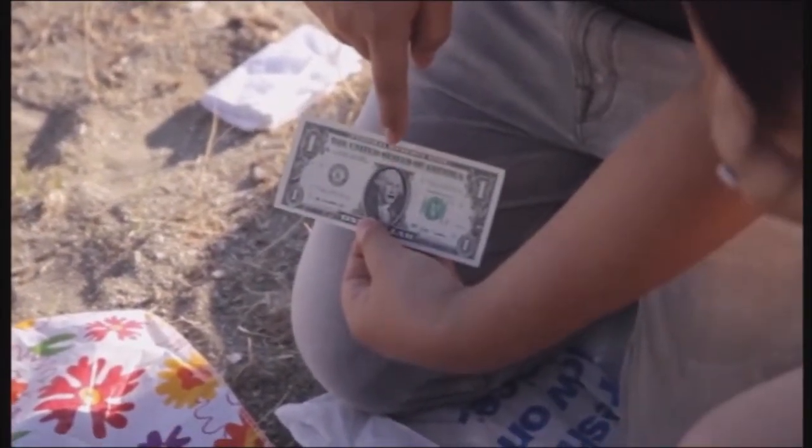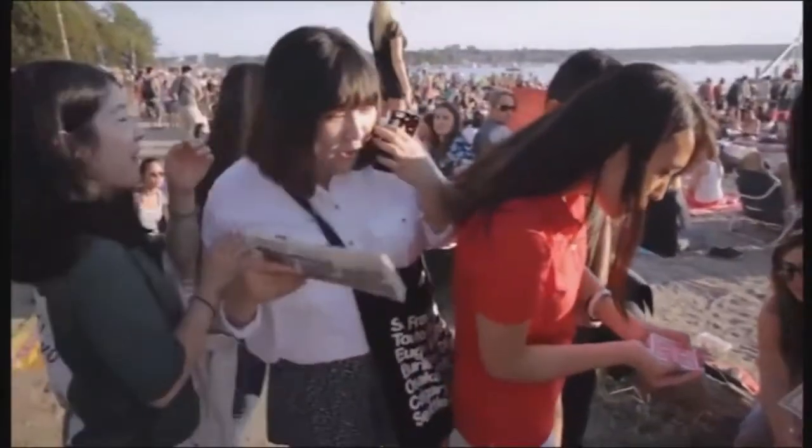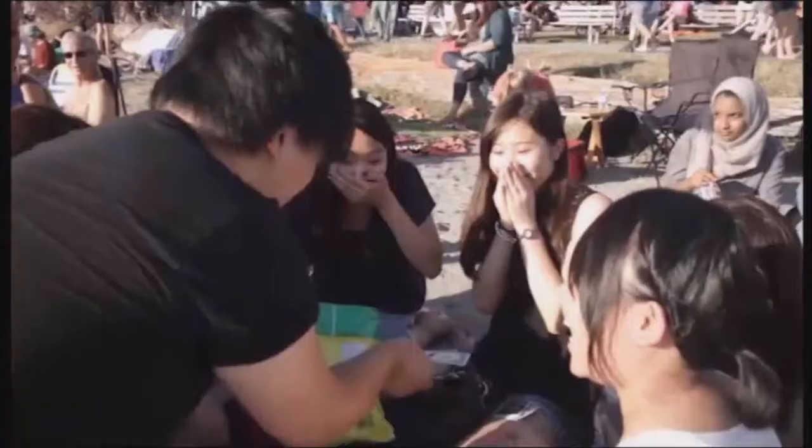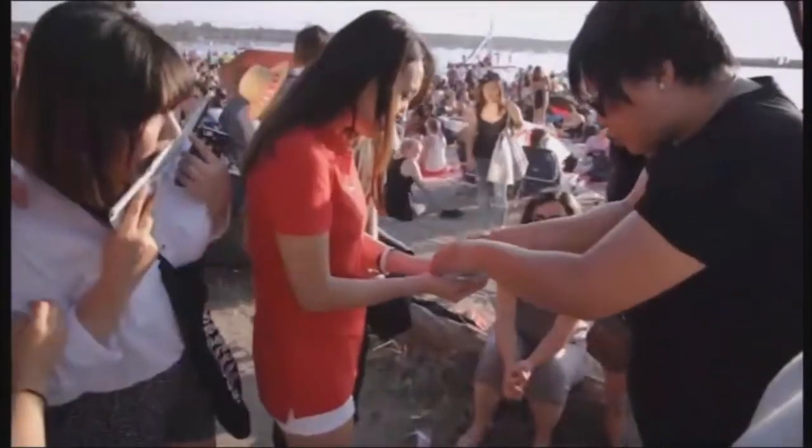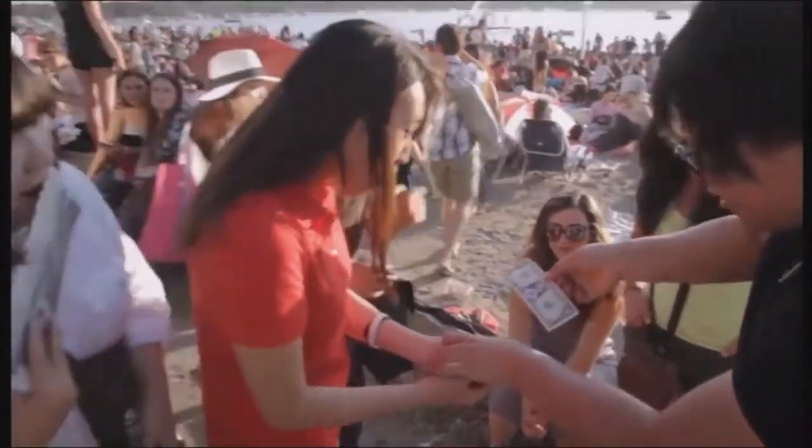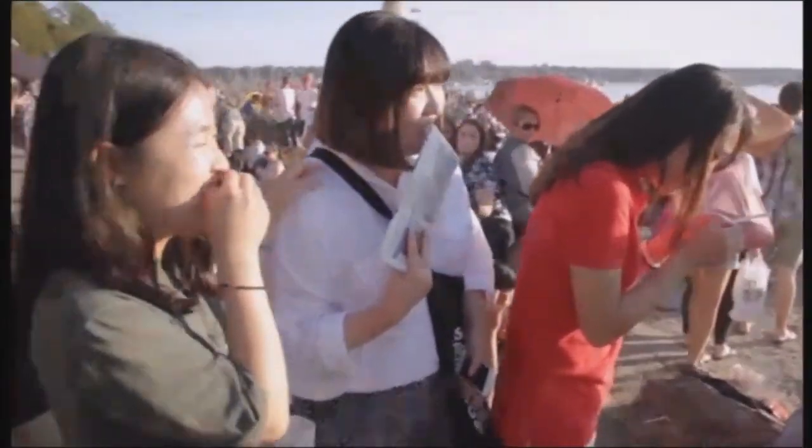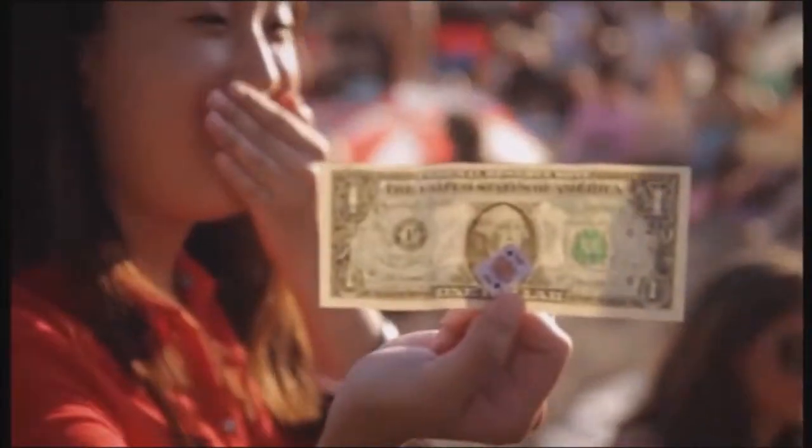Basically the trick goes: you have a card selected, it's returned and lost into the deck. You then bring out a paper bill and say that the president or important figure on the face of it is your helper. You can make the mouth on the important figure animate and do this as a funny thing or maybe like a spooky thing.